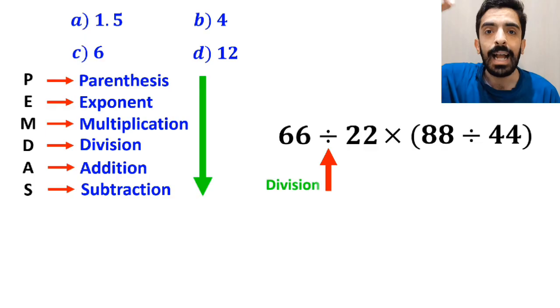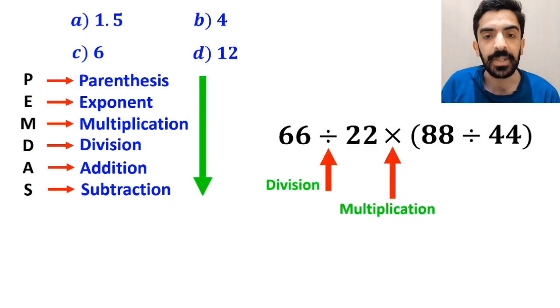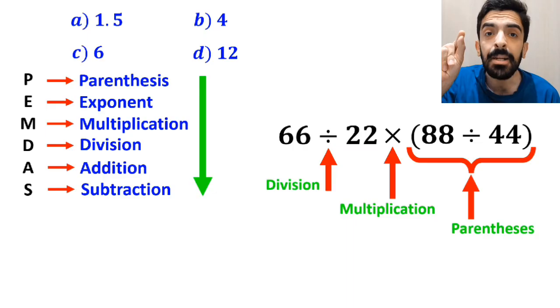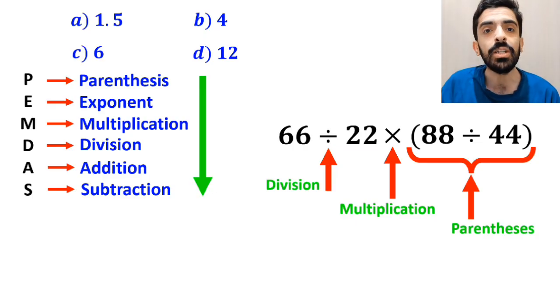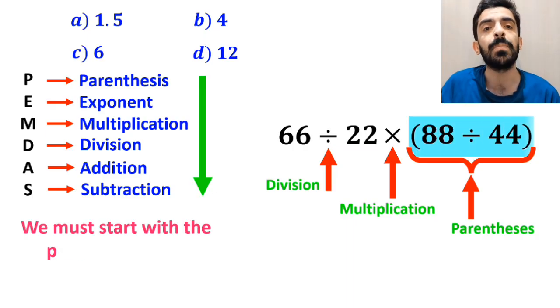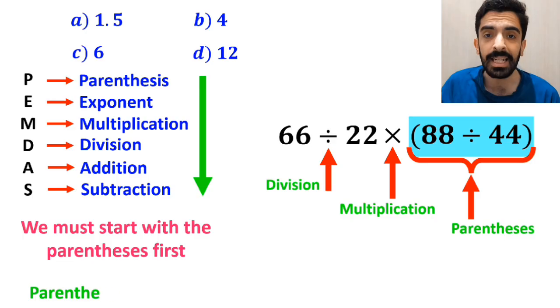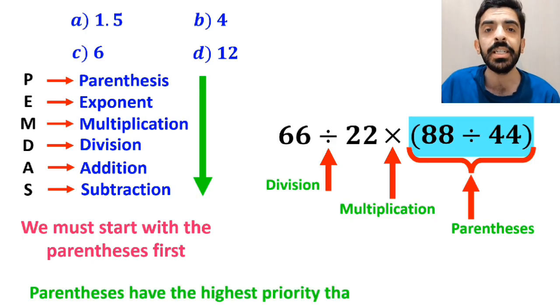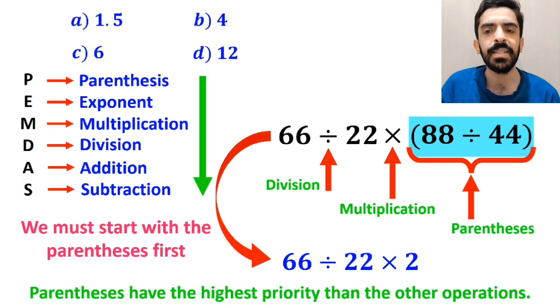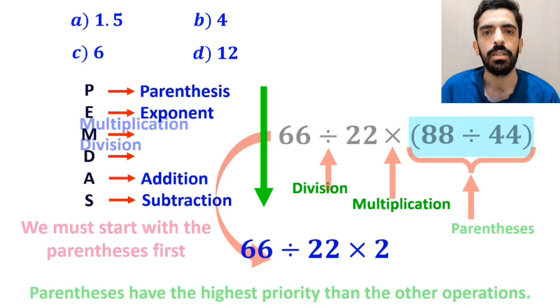As you can see on the screen, in this expression, first we have a division sign, then a multiplication sign, and finally, parenthesis. According to the PEMDAS rule, we must start with the parenthesis first, because parenthesis have the highest priority compared to other operations. So we can rewrite this expression as 66 divided by 22 times 2.